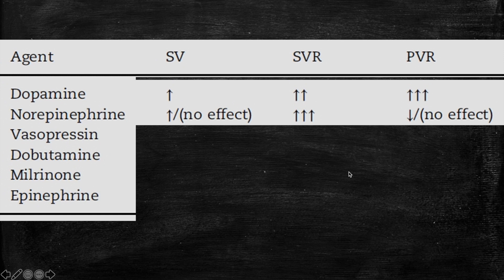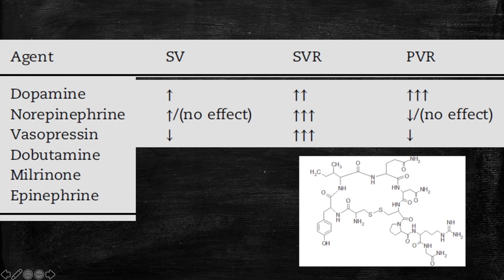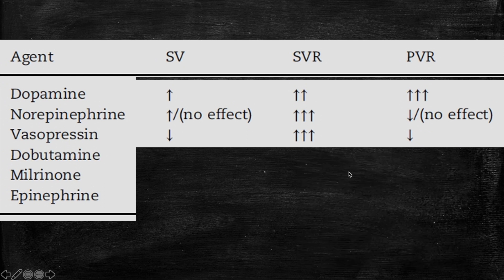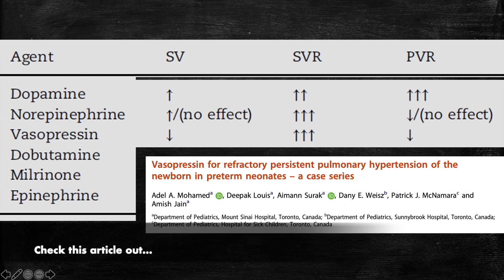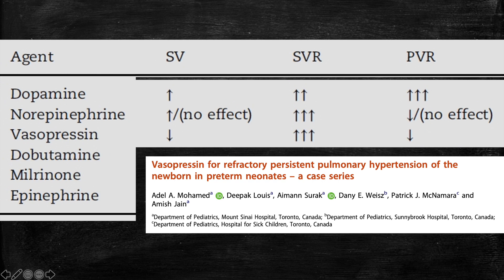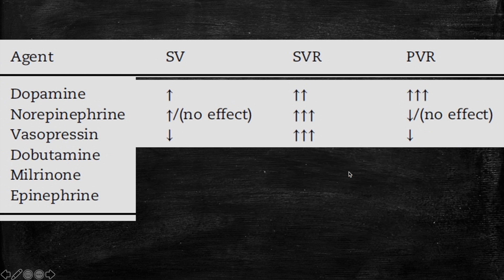The next agent which has become more popular in recent years, vasopressin, works also similar to the norepinephrine. It has a systemic vascular resistance effect. It will increase that. So it helps you in the warm shock. The good advantage of vasopressin is that you can use it in cases of pulmonary hypertension because there is maybe some effects on the pulmonary vascular resistance as it decreases it a little bit. So it may help. It may work as an adjunct therapy to the inhaled nitric oxide, for example.